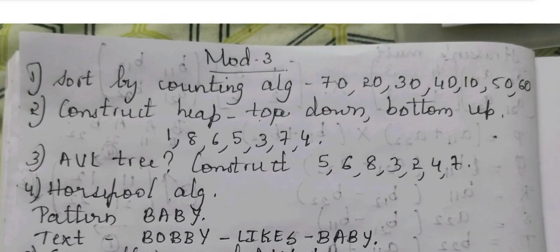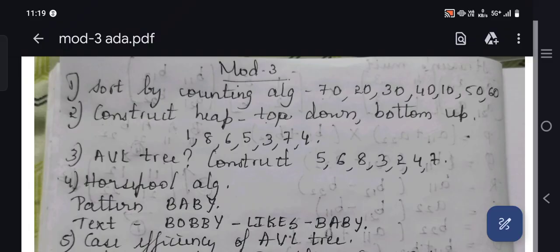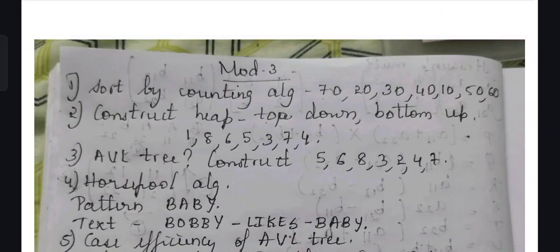Welcome back to our channel Active Catalyst. In this video I'll be discussing Model 3 important questions for ADA exam. The first important concept is sort by counting algorithm - very simple. You just have to give the numbers and count based on the maximum and minimum numbers.